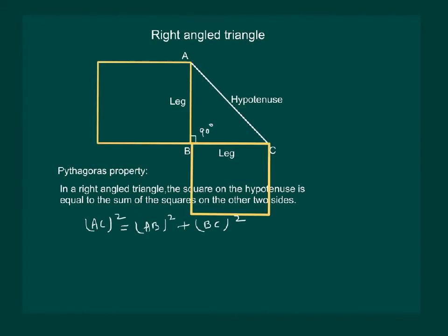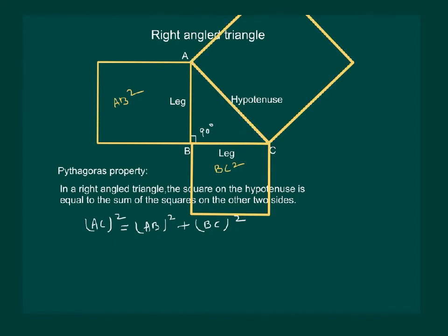That means hypotenuse squared equals the sum of the squares of the legs. If we draw a square on side AB and side BC, the area of the square on AB is AB squared, and the area of the square on BC is BC squared. If we add these two areas, the total equals the area of the square drawn on the hypotenuse — which is the largest square, and its area equals the sum of the areas of the squares on the legs.